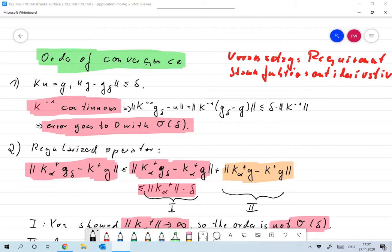By that I mean the following. I would like to return to our original challenge. We want to solve the equation KU equals G for an operator K, and all we have is an approximation G delta to G with an error level of maximum delta.